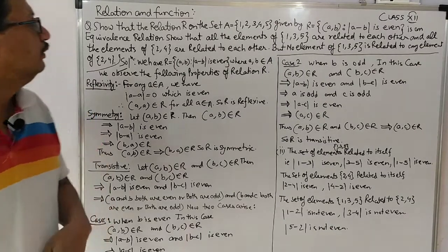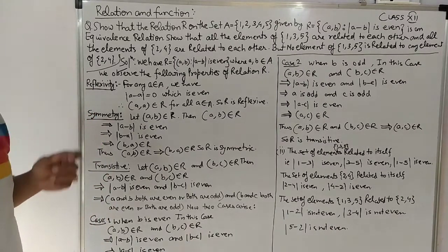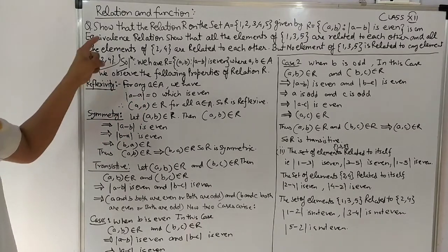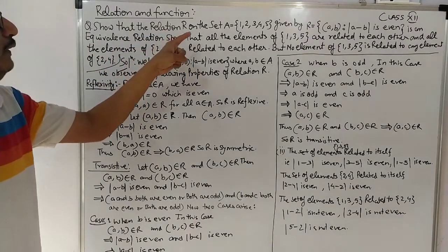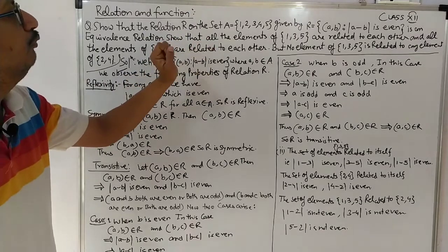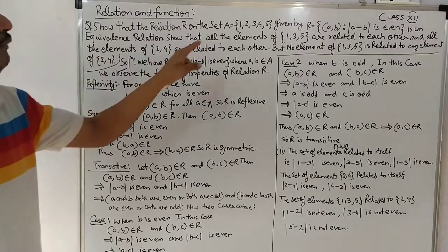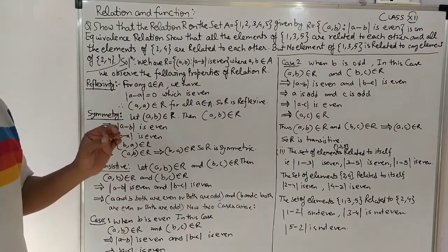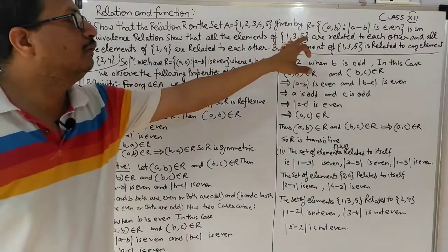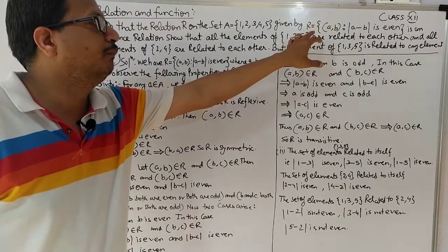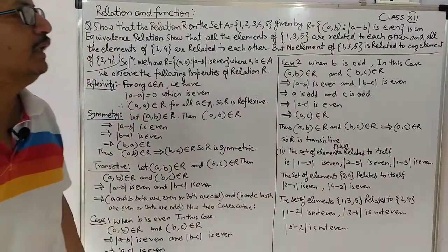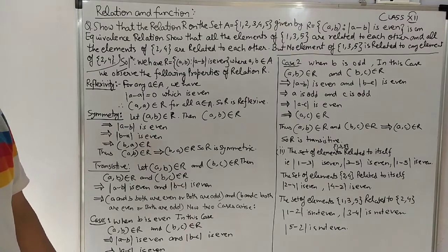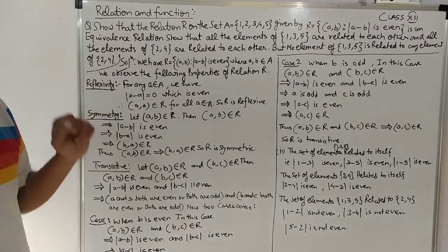Good morning to all of you. Today I am going to discuss one more important question. Show that the relation R on the set A = {1, 2, 3, 4, 5}, given by the relation R = {(a, b) : |a - b| is even}, is an equivalence relation.